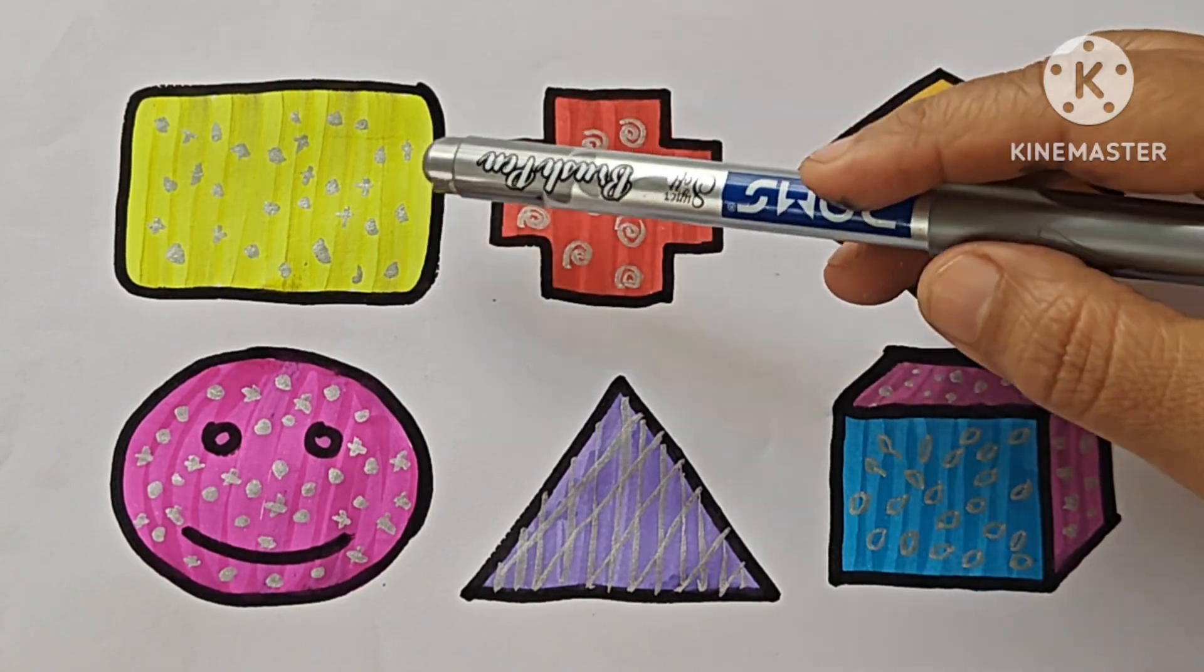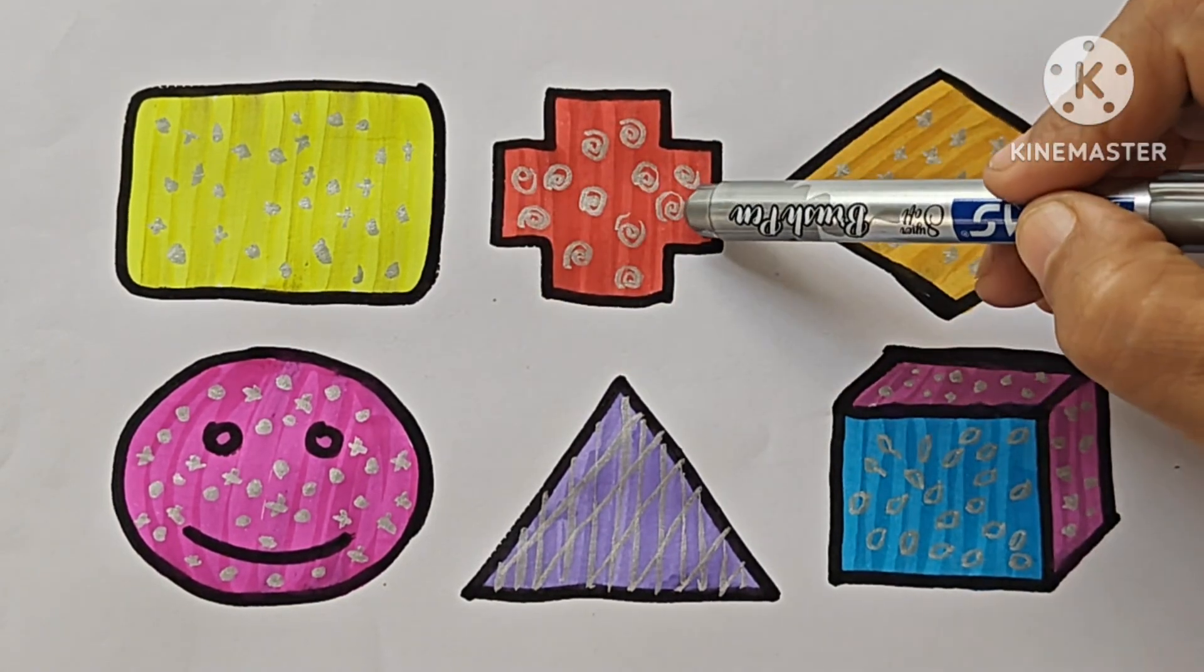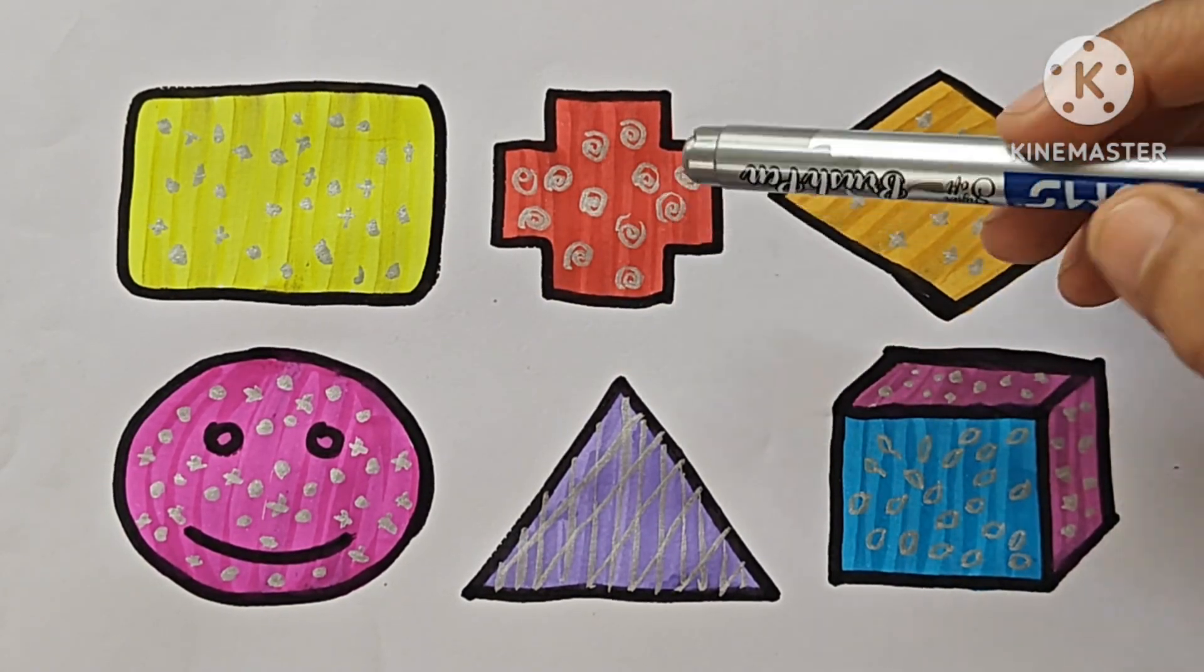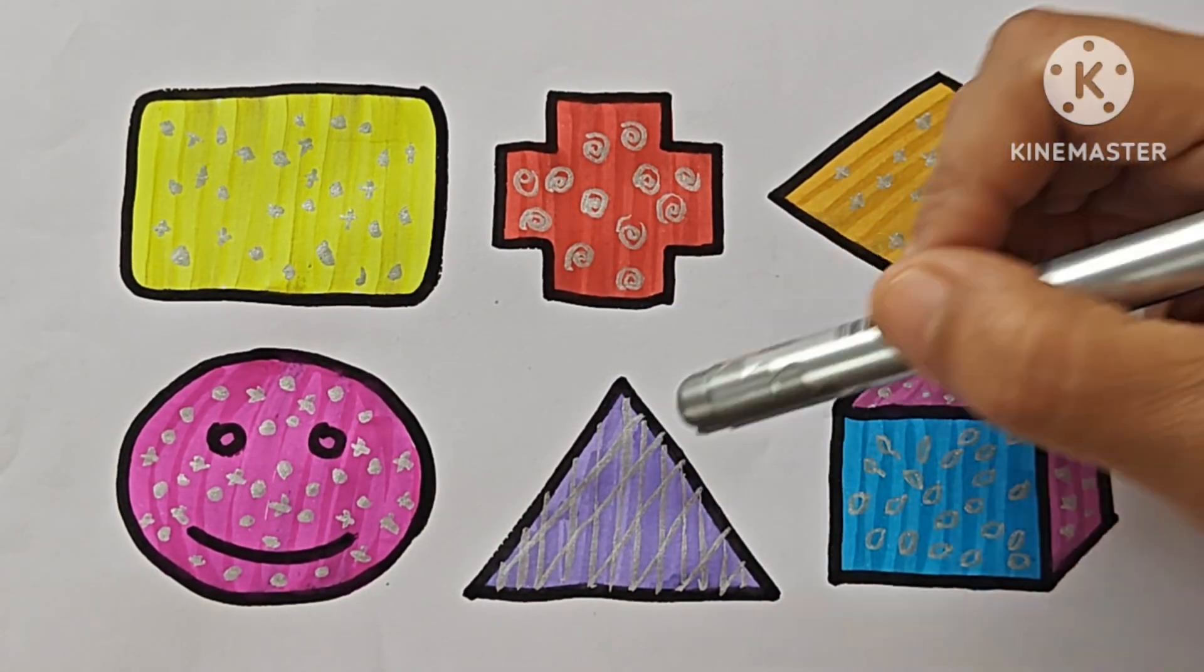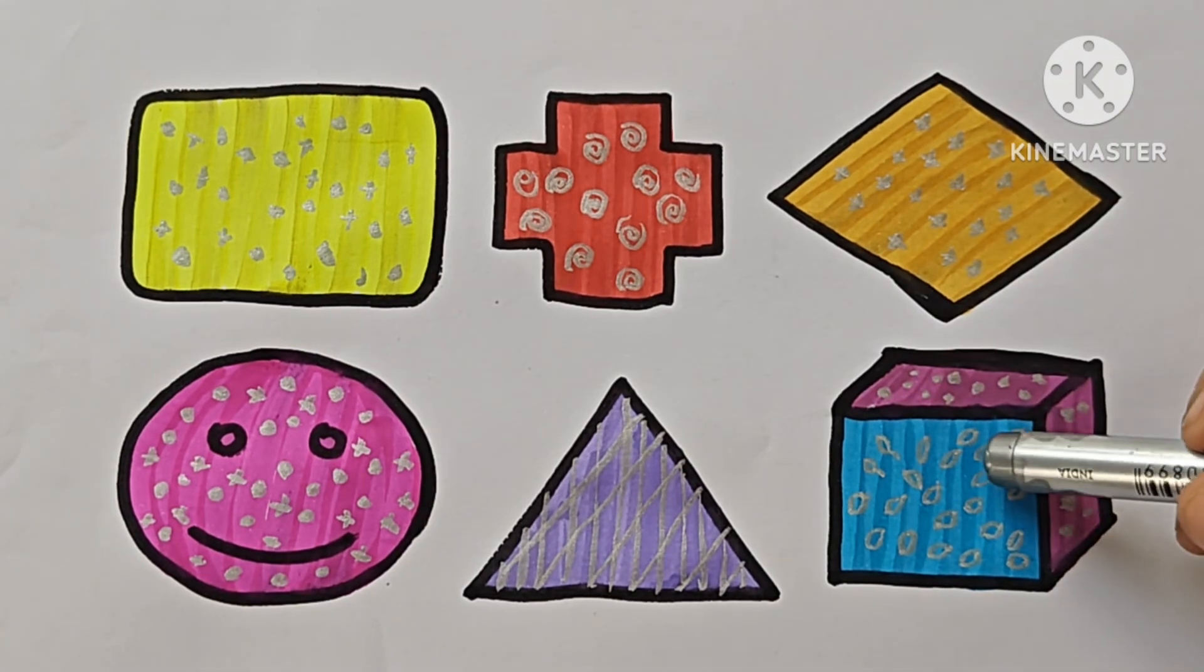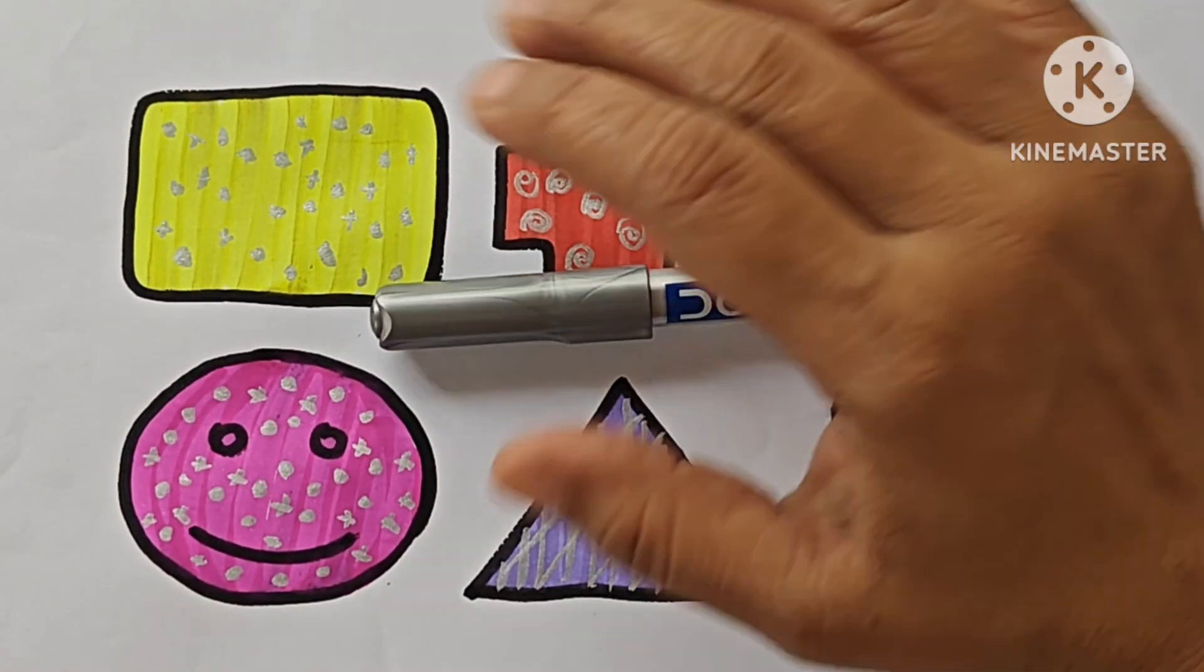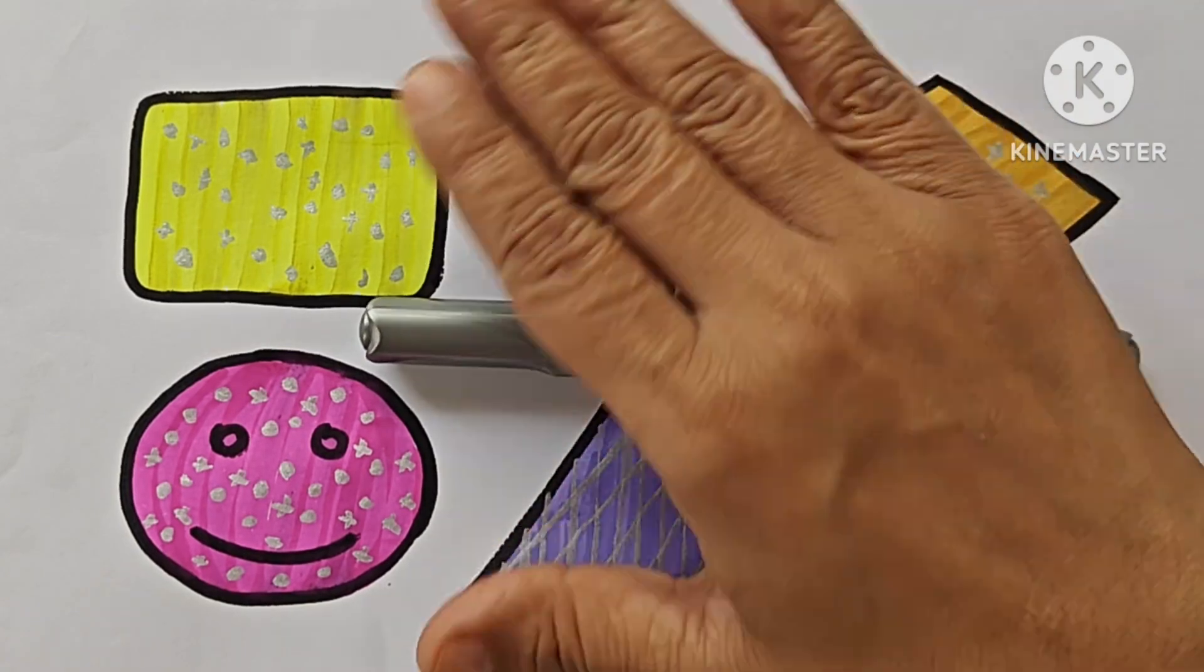This is rounded rectangle. Cross, also called addition symbol. Rhombus or diamond. Smiley emoji. Triangle. This is cube, it has six faces. Thanks for watching this video. Don't forget to like and subscribe and keep learning. Bye bye.